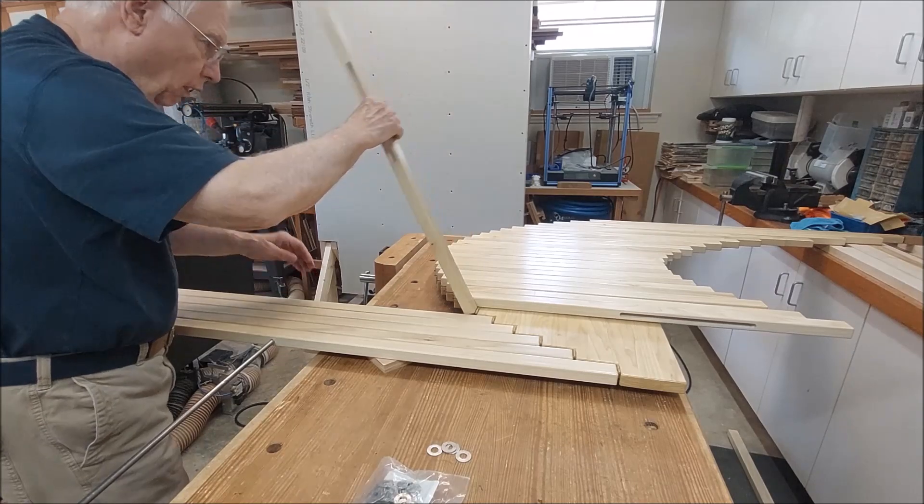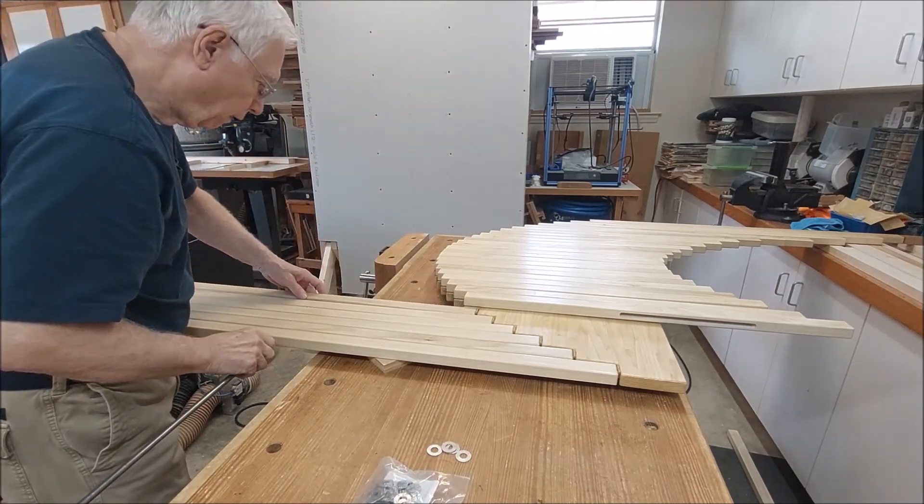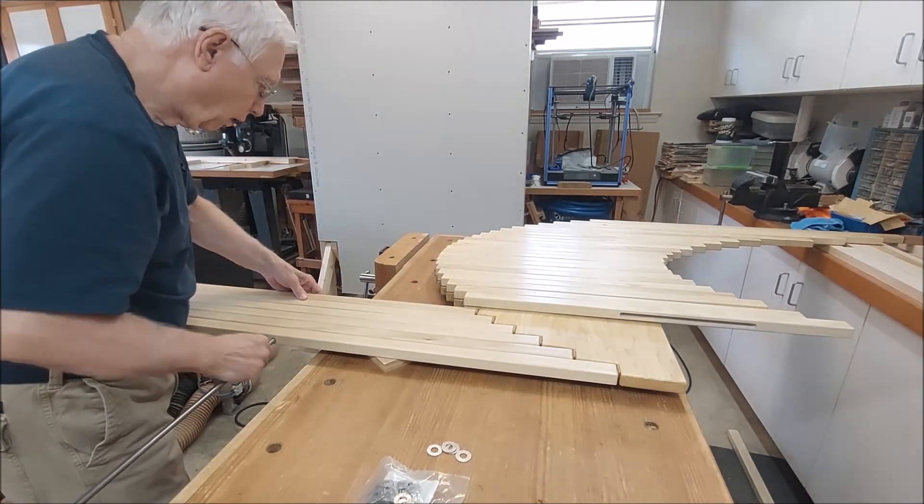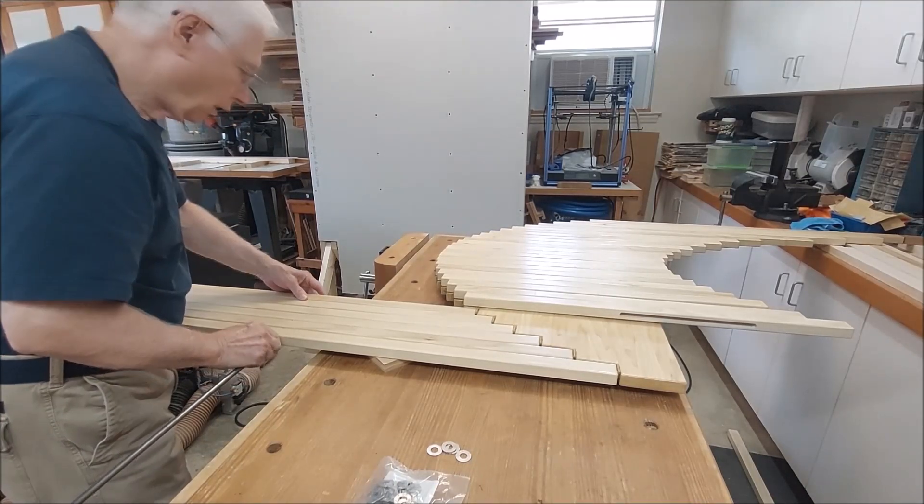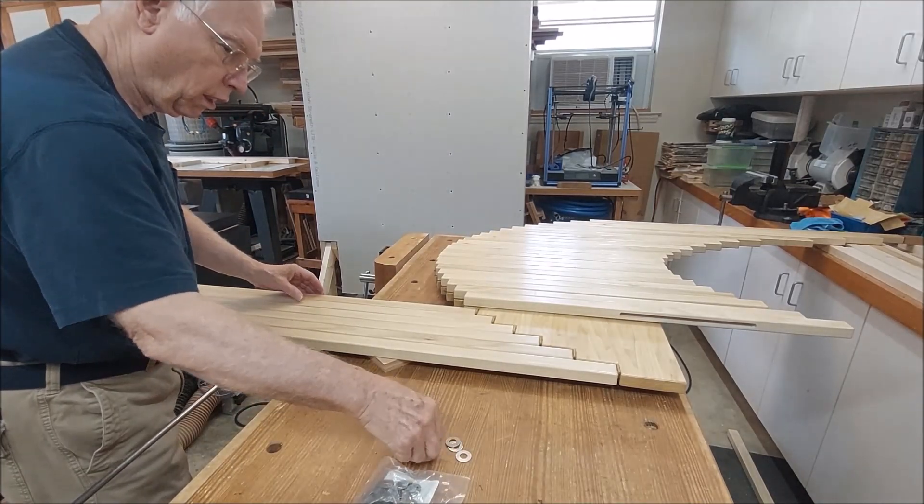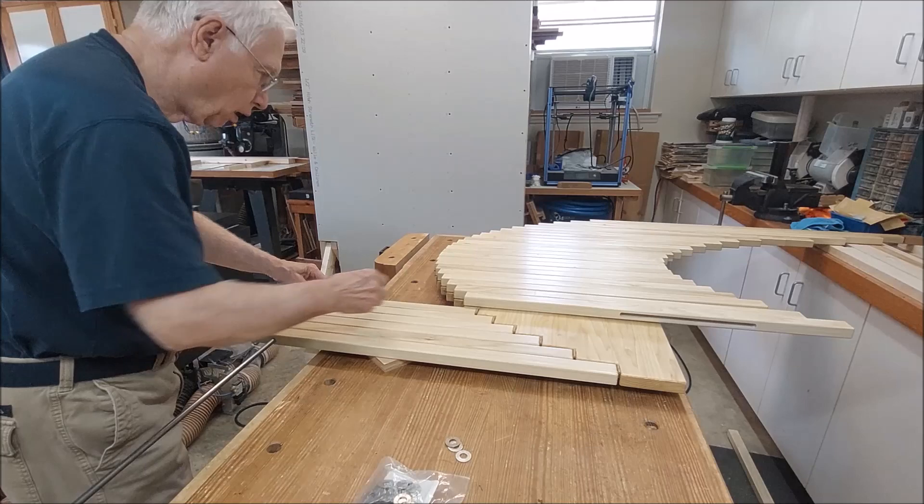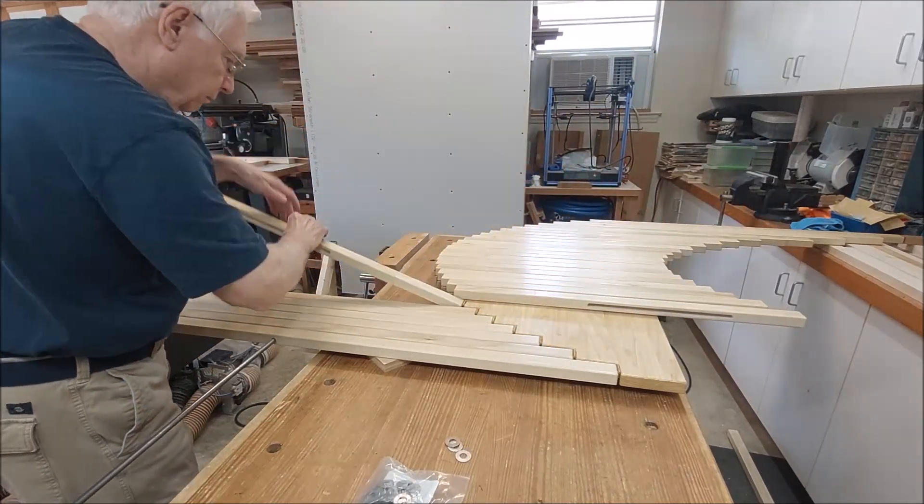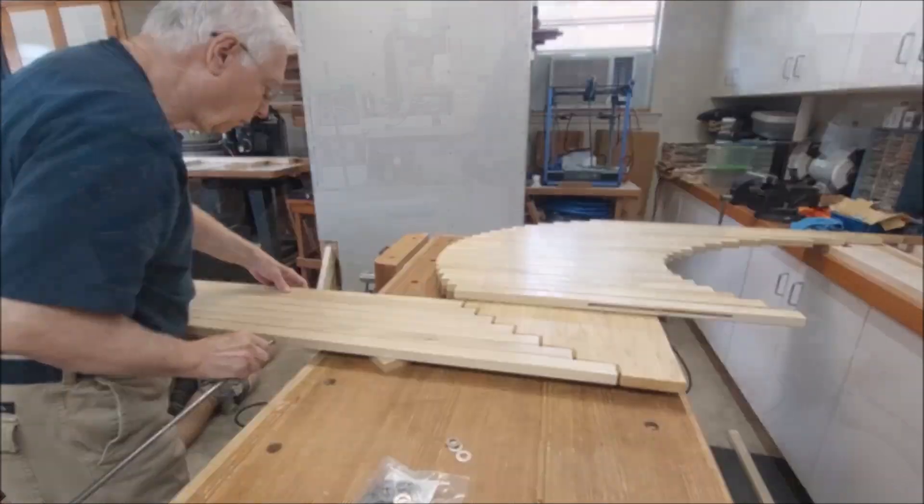Here is the installation of the three-eighths inch steel rod through the slots in the slats. I initially placed a stainless steel washer between each slat. This proved to have been a mistake.